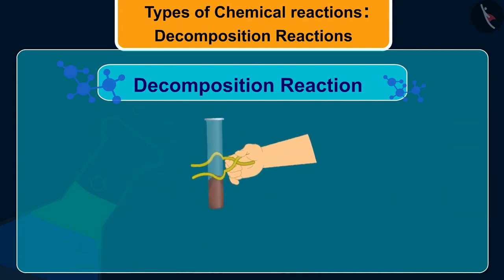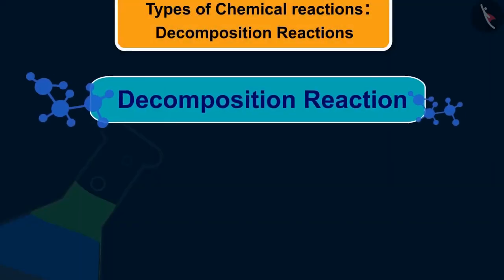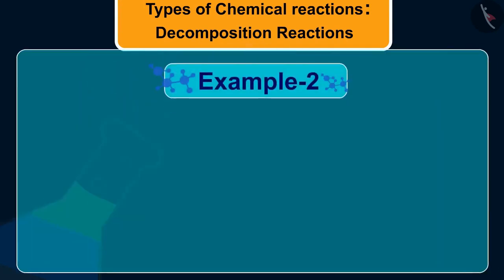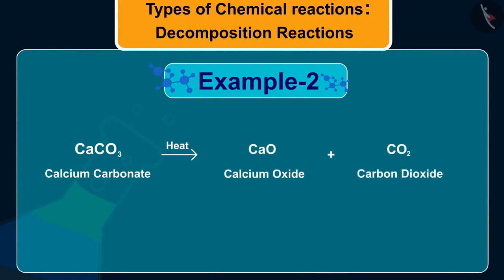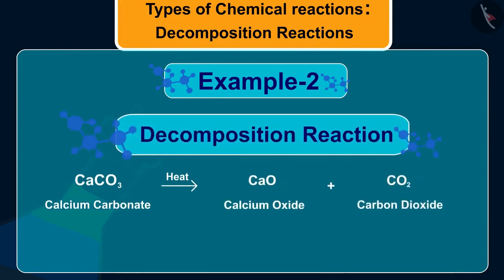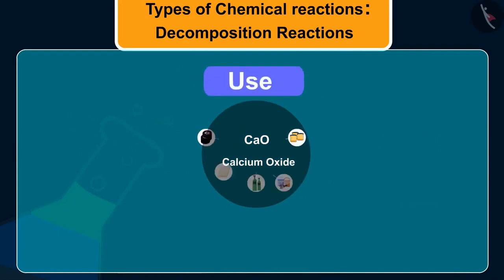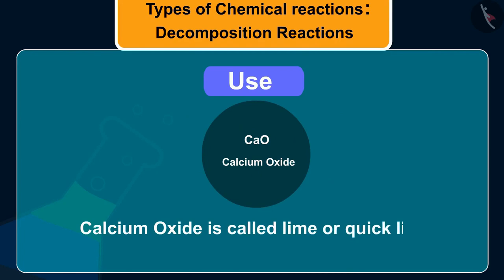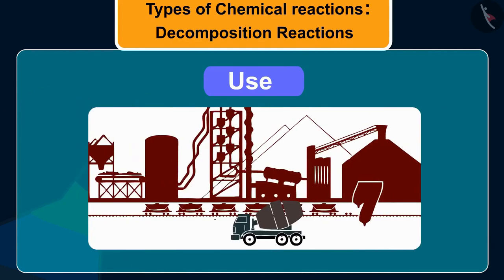Isn't it fun? Let us now discuss one more example of decomposition reaction, which is decomposition of calcium carbonate to calcium oxide and carbon dioxide. It is an important decomposition reaction used in various industries. Calcium oxide is called lime or quick lime is used in the manufacture of cement.